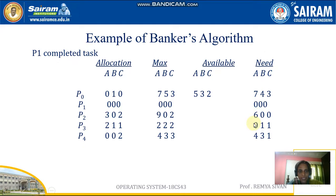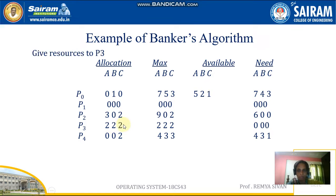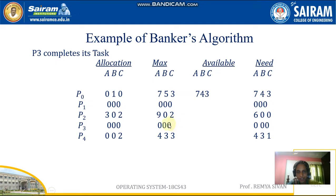Next is P3. P3 requires only 1B and 1C. We have enough resources — 1B and 1C are available. So we give resources to P3. P3 will now have 2, 2, 2 — the maximum they required. After getting the maximum resources, P3 completes its task and releases resources back to the currently available set. Now currently available is 7, 4, 3.